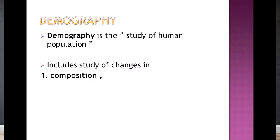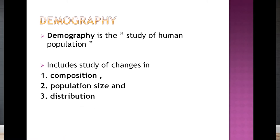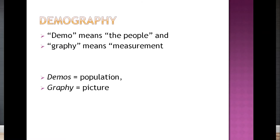Demography is the study of human population. It includes the study of changes in three important things: number one, the composition of the demography; number two, the population size; and number three, the distribution component of the demography. So in demography, you are going to study these three important components: composition, population size, and distribution.